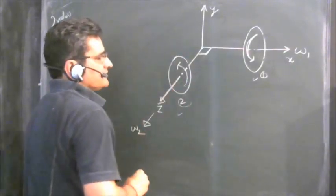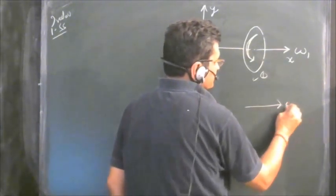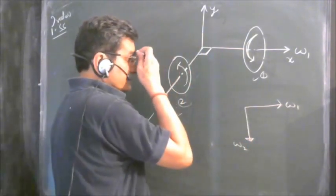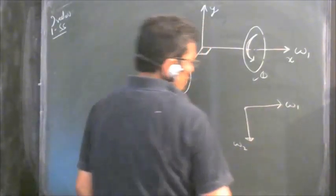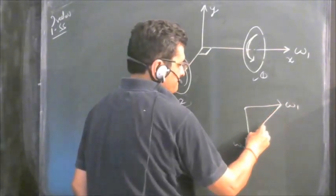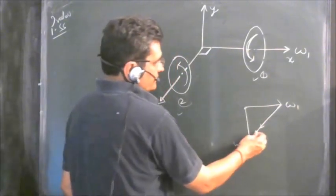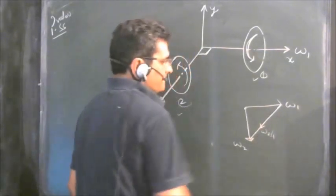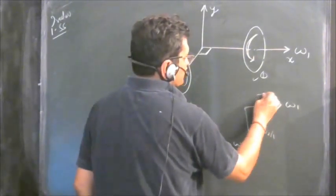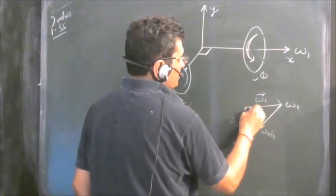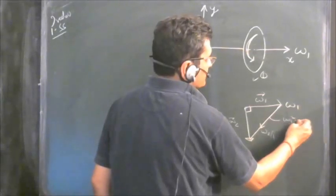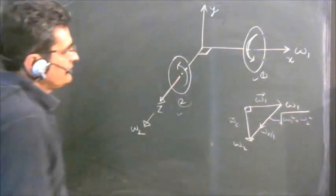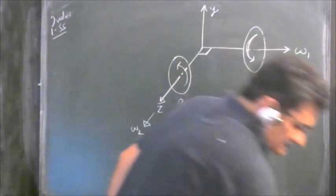We have to find the relative angular velocity of one disc with respect to another. This is a vector quantity: omega 1 is in this direction, omega 2 is in this direction. If you join them, drawing in this direction, this gives omega 2 with respect to 1. Since they are perpendicular, this equals the square root of omega 1 squared plus omega 2 squared. This is the relative angular velocity between the two discs.